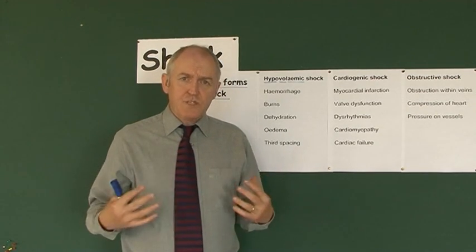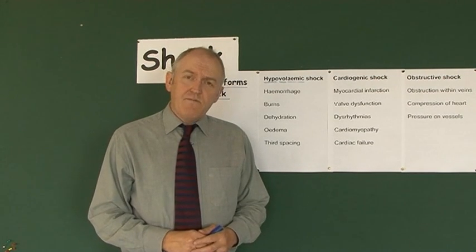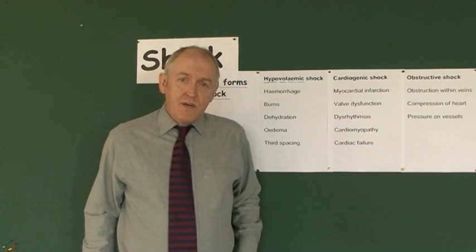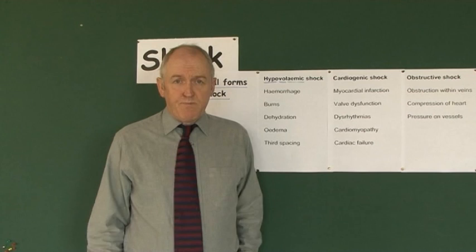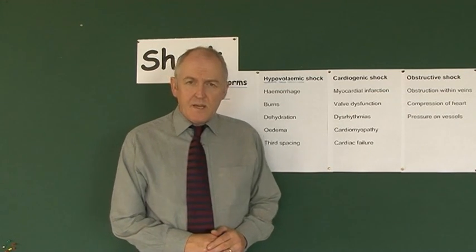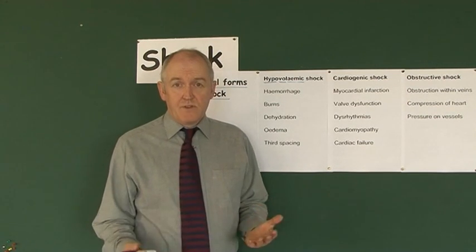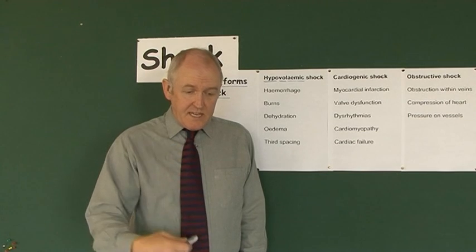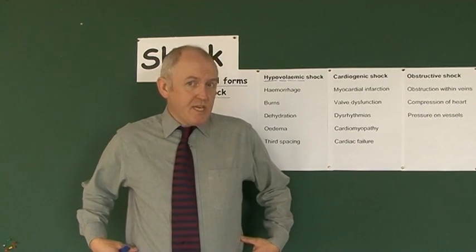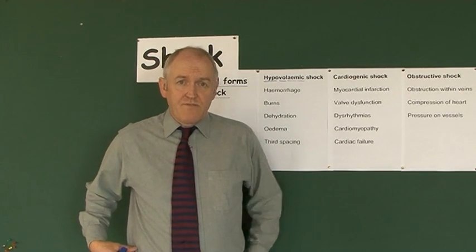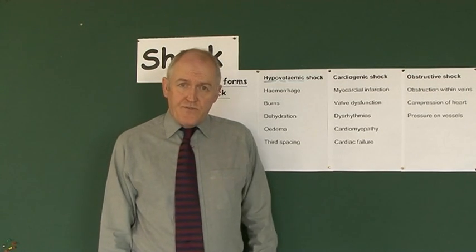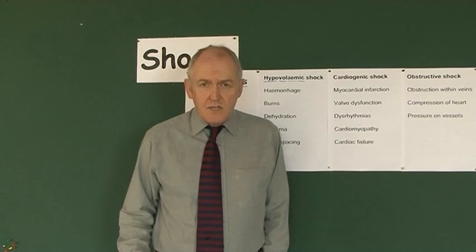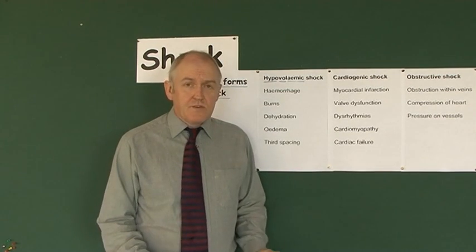Haemorrhage can also be internal — it's possible to bleed into body cavities. In various places in the body there are potential spaces, for example the peritoneal cavity or the pleural cavity, and blood can leak into these. Blood can also be lost through long bone fractures. There's a saying: 'on the floor or four more' — that is, into the thoracic cavity, the abdominal cavity, the pelvic cavity (especially with a fractured pelvis, where bleeding can be torrential), and in the limbs due to fractures of long bones. A litre or more — maybe up to a litre and a half — can be lost through a fractured femur, and 750 ml through a fractured tibia.